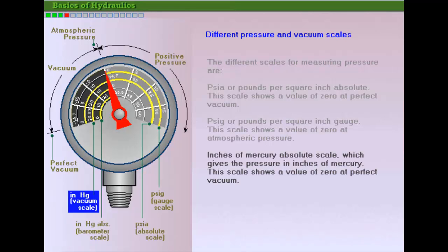Inches of mercury vacuum scale, which gives the vacuum reading in inches of mercury. This scale shows zero at one atmosphere pressure.